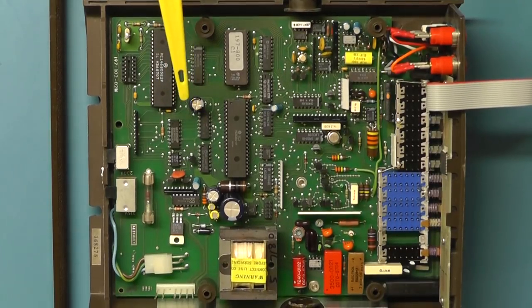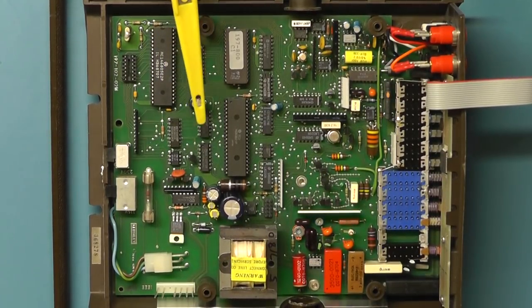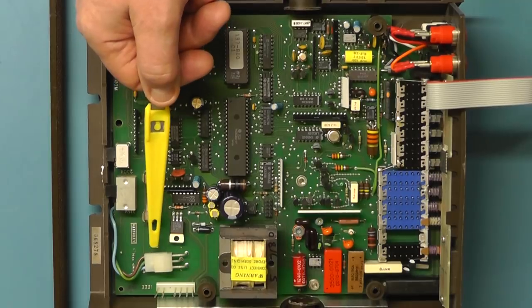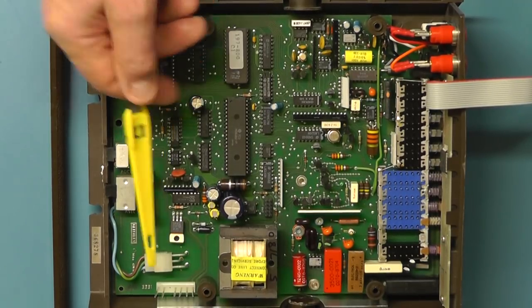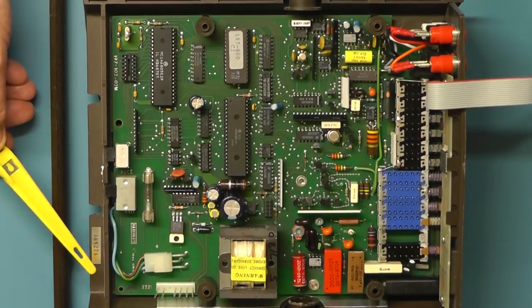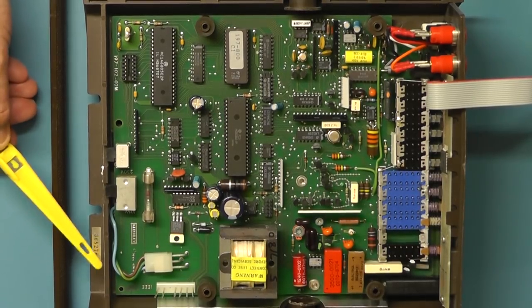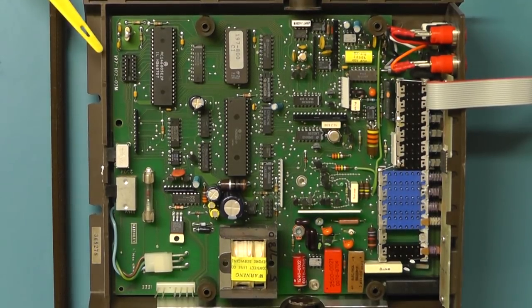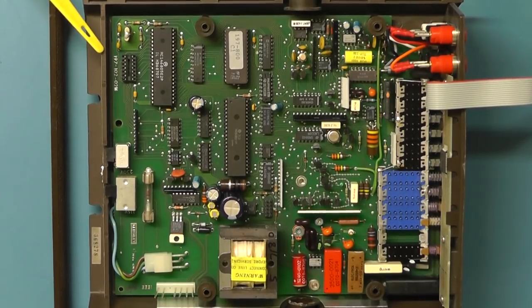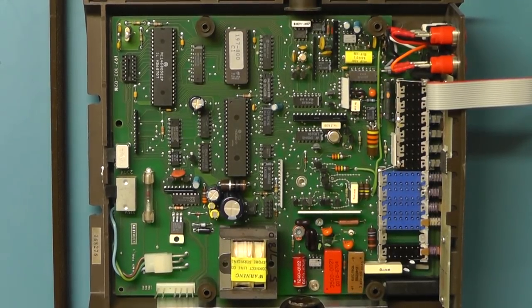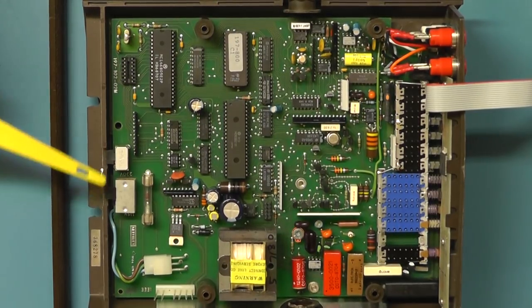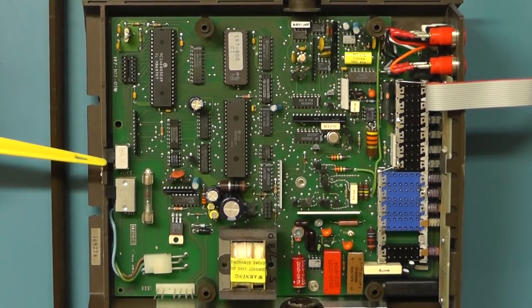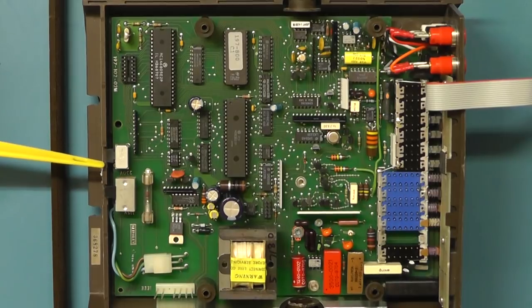As this particular meter is the 197 you'll see that the mains input lead is quite straight onto the board there whereas the 197A the A version would actually have a mains socket an IEC mains socket at the back there so that would be one of the main differences really and you'd also have a push-button switch at this side for the backlight for the liquid crystal display. At the back of the meter here we've got the mains selector switch there and the calibration switch is there next to it.